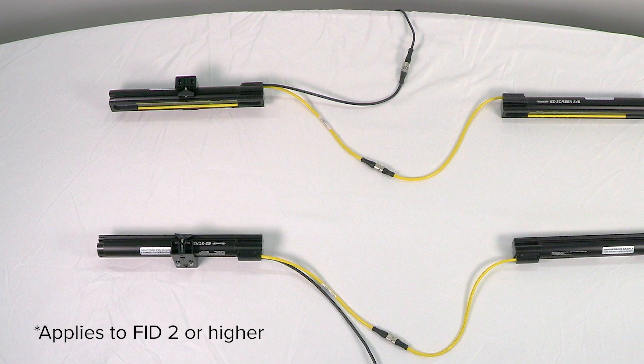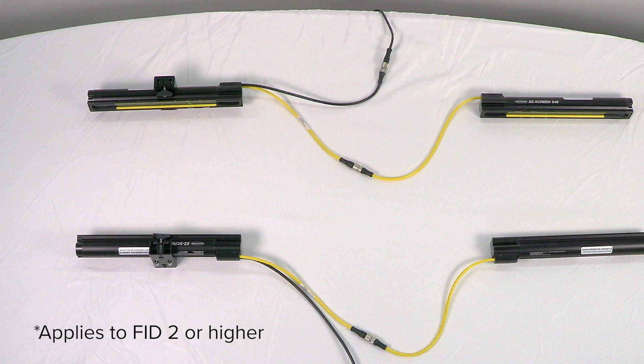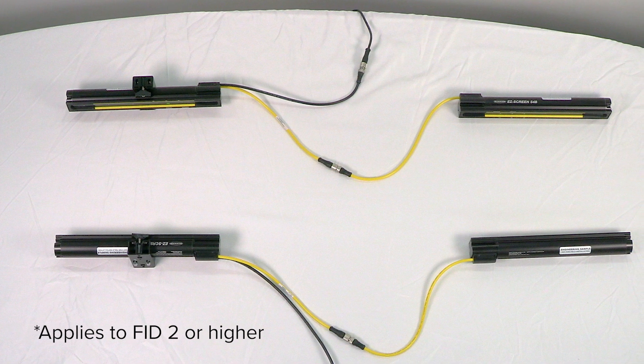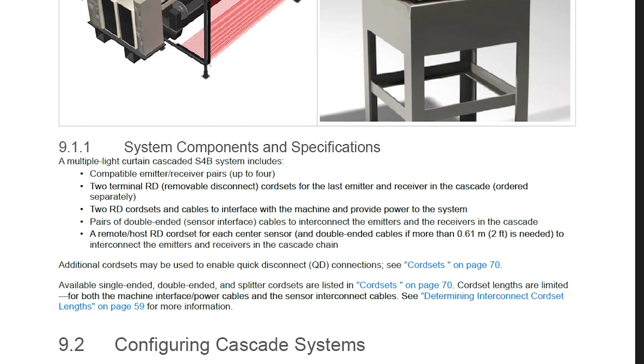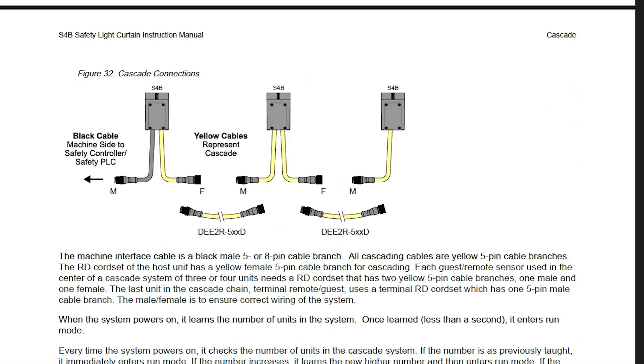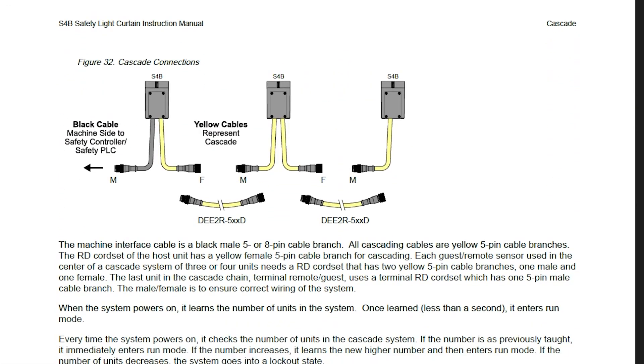All S4B light curtains can be used as standalone units or as part of a cascaded chain with up to four units. Adding multiple curtains to a chain requires the right cord sets, which may be ordered as part of a cascaded light curtain kit.